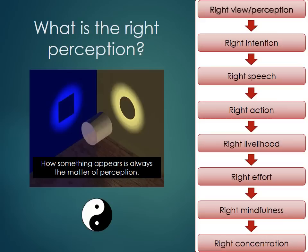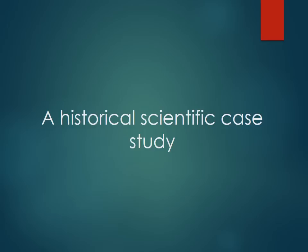The right perceptions will lead to the right intention, the right speech, the right action, the right livelihood, right efforts, right mindfulness, and the right concentration. This is one of the fundamental cores of the Buddhism teaching called the Eightfold Path.